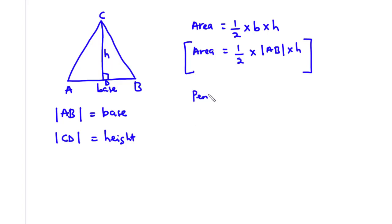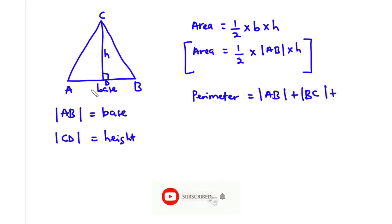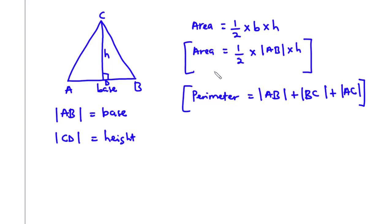Now to the perimeter. The perimeter is basically the sum of the length of all three sides. So that is AB plus BC plus AC. The sum of the length of all three sides of the triangle is the perimeter. These are the formulas for finding the area and perimeter of a triangle.